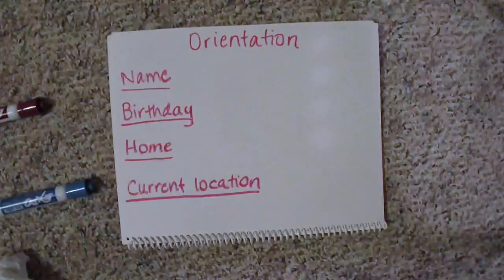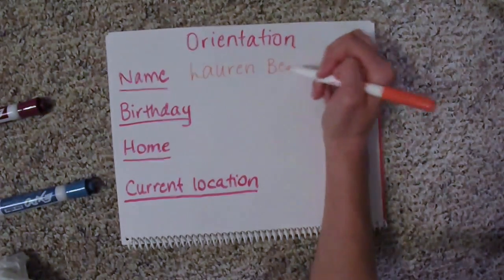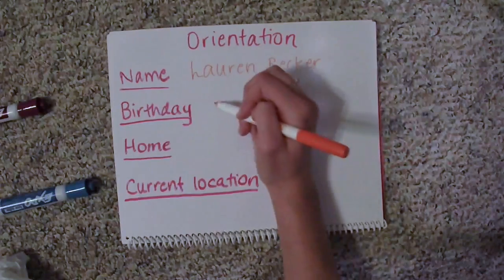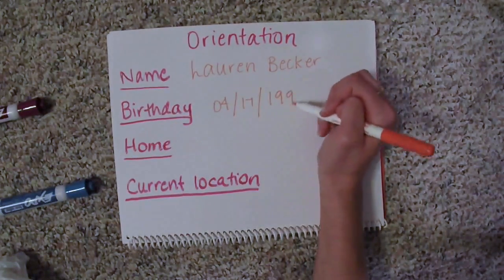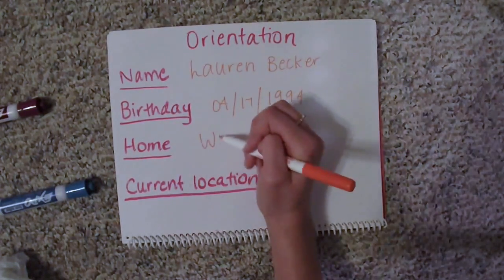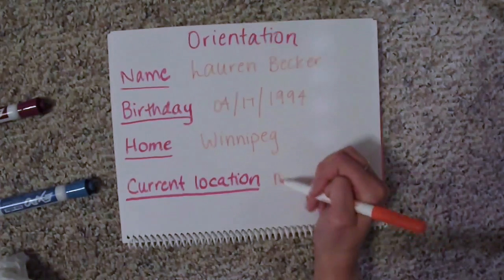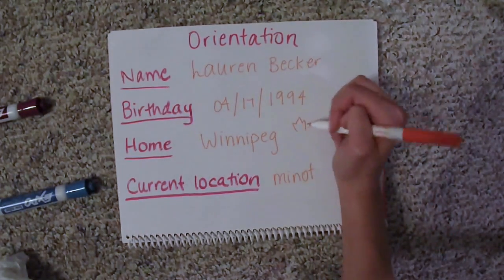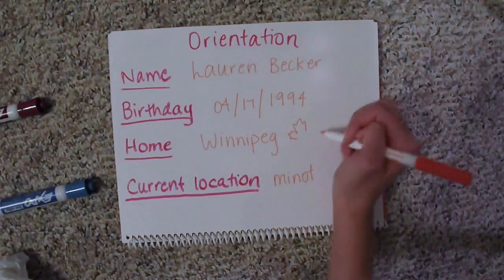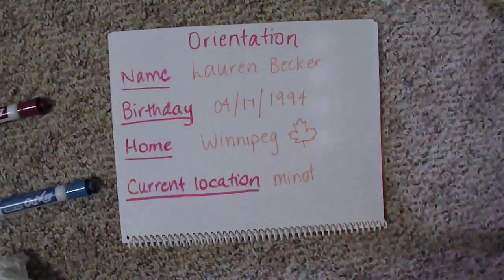Treatment involving orientation deficits can involve teaching and then asking the patient information such as their name, birthday, hometown or where they currently are, their phone number, family members' names, or the current president or the Prime Minister if you're Canadian.